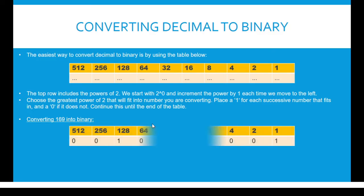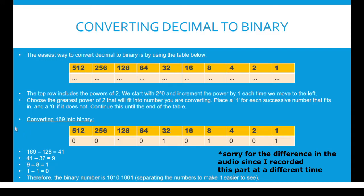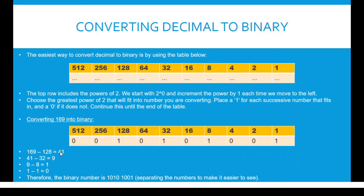Let's take an example of 169. The largest number that can be subtracted from 169 is 128, so 169 minus 128 is equal to 41. The next biggest number is 32, so we subtract it to get 9. The next number is 8, so 9 minus 8 is 1, and 1 minus 1 is equal to 0. We put a 1 for each number which does fit — so we put a 1 under 128, 32, 8, and 1. Our binary number is 10101001.